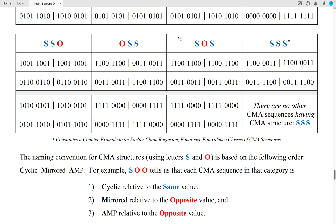And as a second reminder of how to decipher the notation, the naming convention for CMA structures using letters S and O is based on the following order. The C up here in CMA stands for cyclic, the M stands for mirrored, and the A stands for AMP. So in particular, an SOO CMA structure tells us that each CMA sequence in that category is cyclic relative to the same value, it's mirrored relative to the opposite value, and it's an AMP relative to the opposite value, as we can see above.